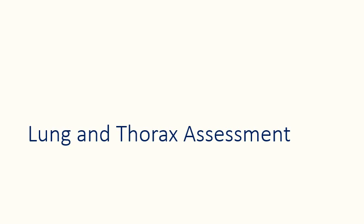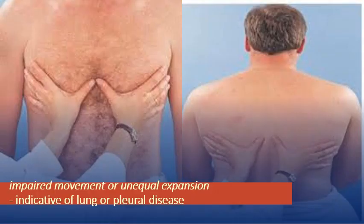For lung and thorax assessment, one thing we check is impaired movement or unequal expansion. You can observe the chest directly or place your hands on the anterior and posterior aspects. Impaired movement or unequal expansion indicates lung or pleural disease.